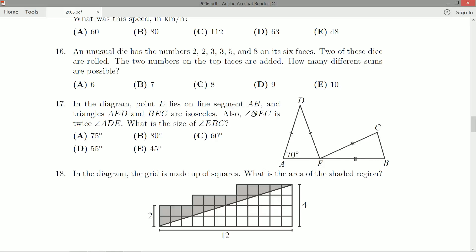Also, angle DEC, so this figure sort of outside the triangly angle, is twice ADE, so the apex of this isosceles triangle. What is the size of angle EBC? So, one of the duplicated angles in this isosceles triangle here.